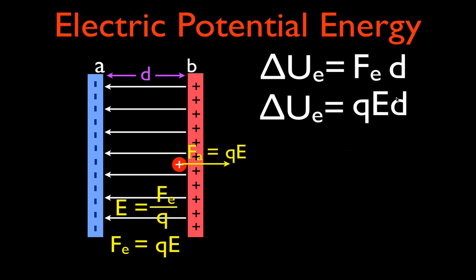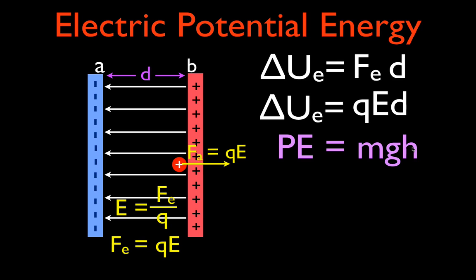This looks very similar to gravitational potential energy — MGH. For gravitational PE, we have a mass moved through a uniform gravitational field near Earth's surface, raised up some height. For electric potential energy, we have a charge moved through a uniform electric field between parallel plates across some distance d. Mass and charge are analogous; gravitational field g and electric field E are analogous; height h and distance d are analogous. So gravitational PE is MGH, and electric PE through a uniform field is QED.